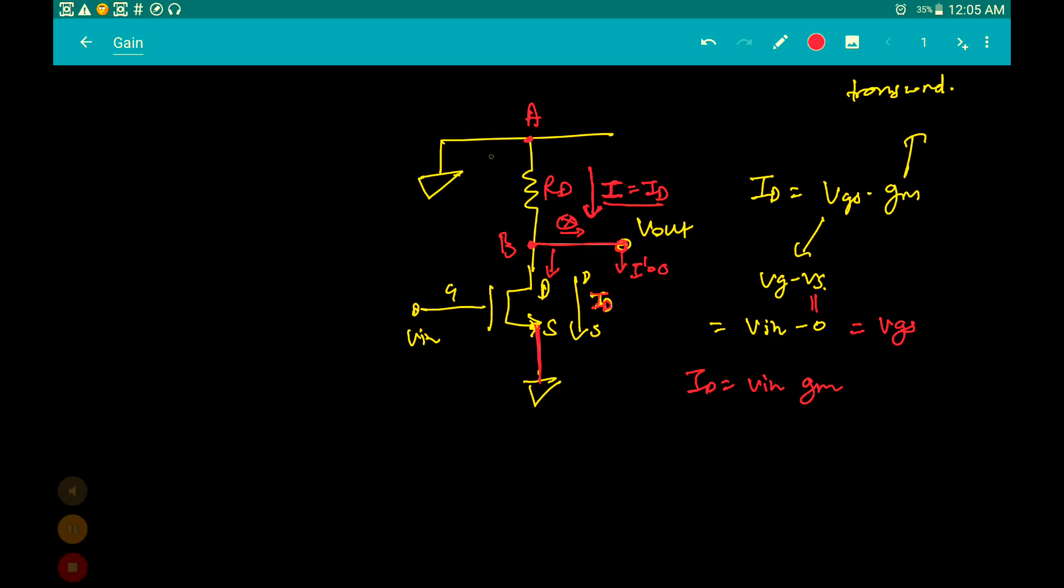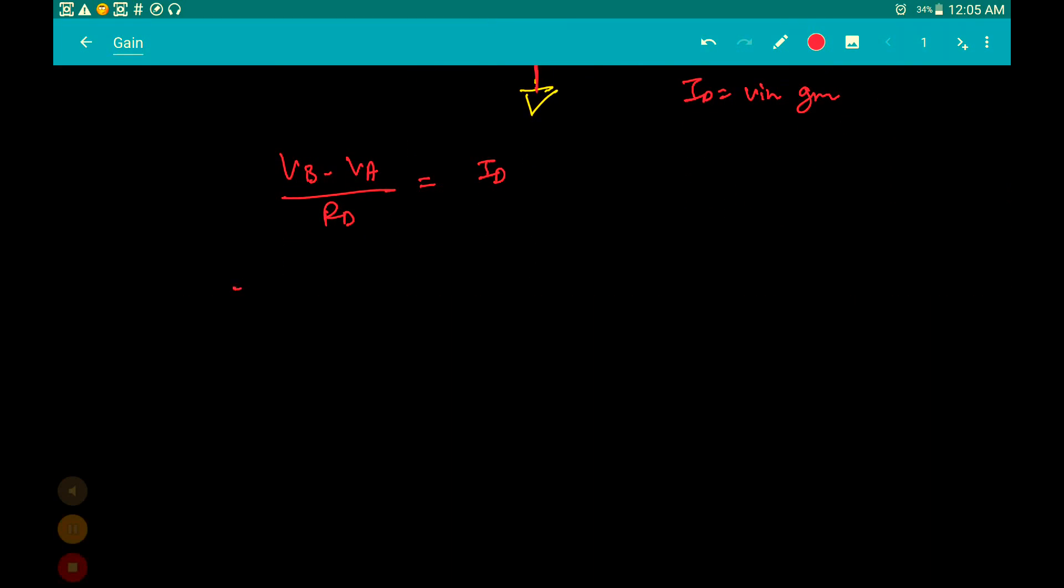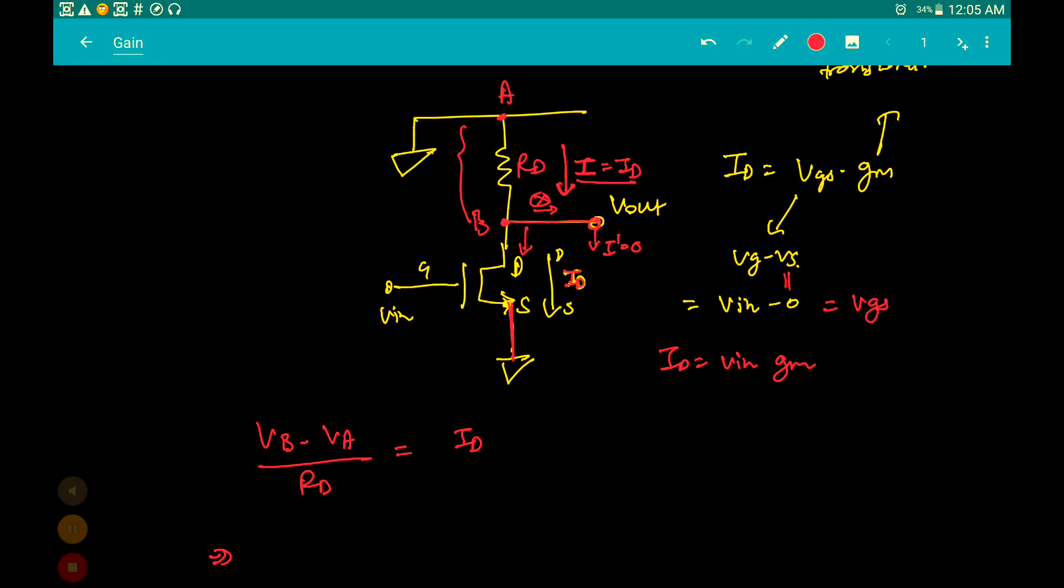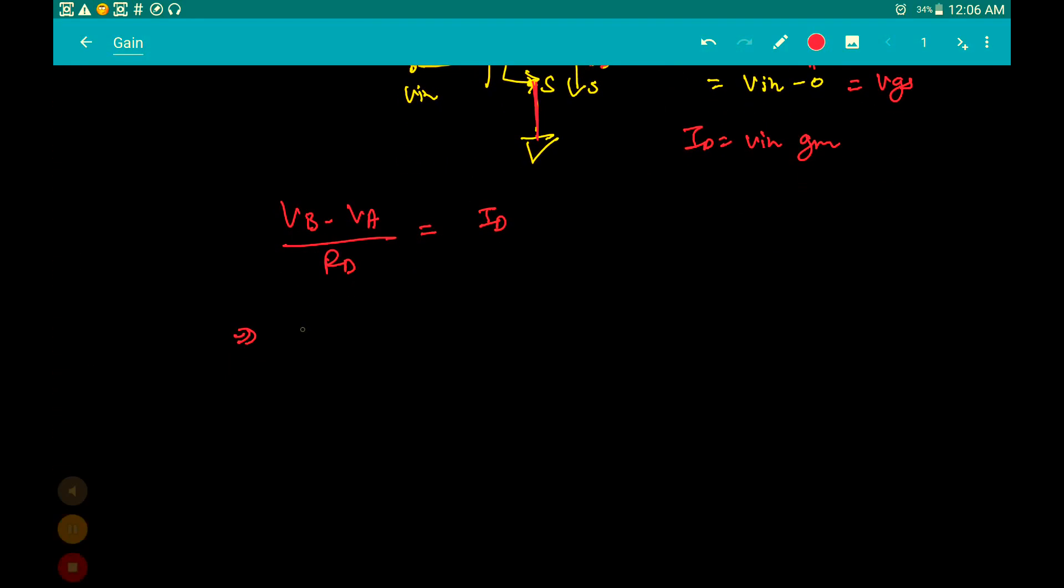Now apply Ohm's law across A and B. VB minus VA upon RD is equal to ID. What is VB? VB is actually Vout, since output is sensed from the node of B. What is the voltage? The voltage at B, which is equal to VB. So VB is equal to Vout.